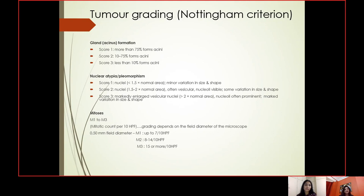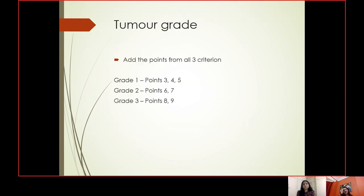For mitosis, the count depends on the field diameter of your microscope. For a 0.50 mm field diameter: M1 is up to 7 mitoses per 10 high-power fields; M2 is 8 to 14; and M3 is 15 or more. Add up all three scores: grade 1 is a total of 3, 4, or 5 points; grade 2 is 6 or 7 points; and grade 3 is 8 or 9 points.